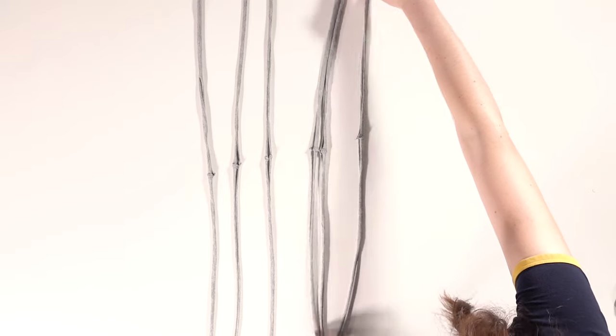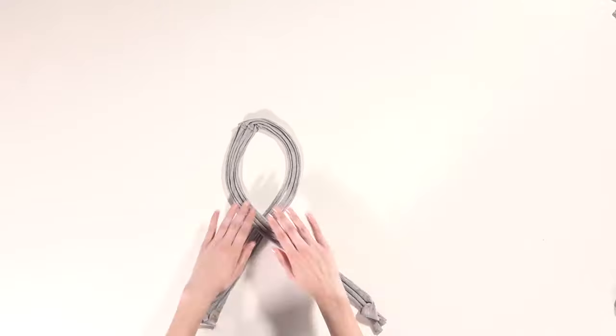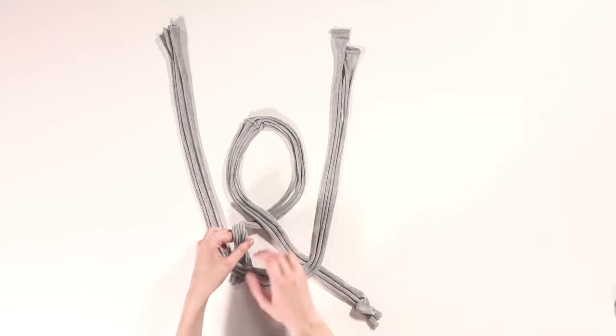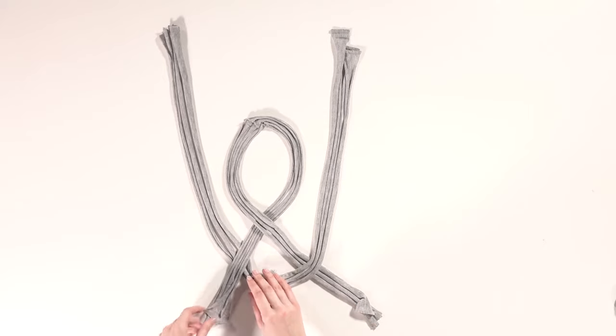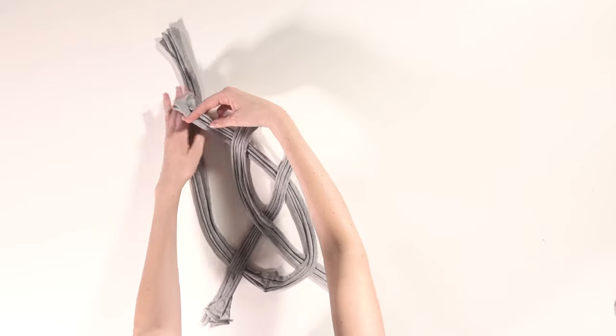Now here's where this DIY gets a bit tricky. Separate three of the strips and lay them out in a loop like this. Then take your other three strips and lay them in a U shape on top. Now we're gonna take the bottom left-hand side of the loop and pull it up and over the U. Next, take the upper right-hand side of the U and slide it under the top of the loop.